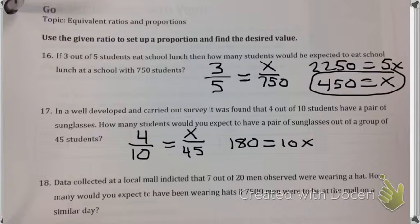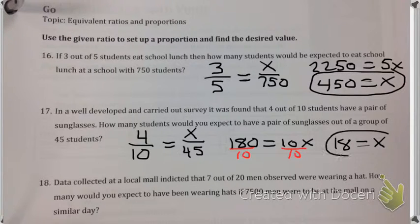You've got to get x by itself, so I'm going to divide both sides by 10. And our answer would be 18 is x. So we'd expect 18 of those 45 students to have sunglasses. Now again, this is probability, not exactitude.